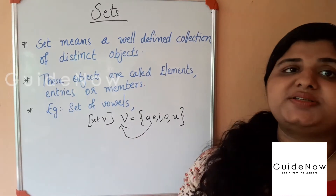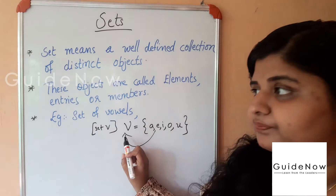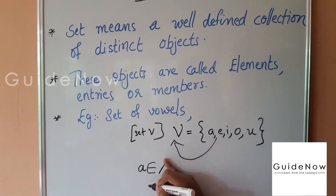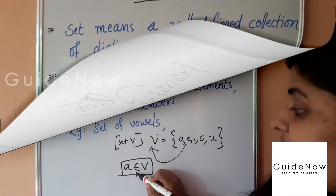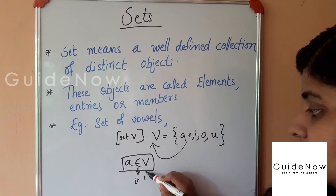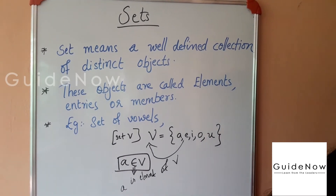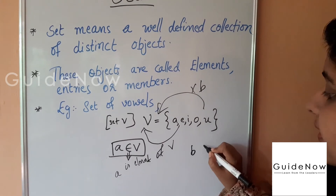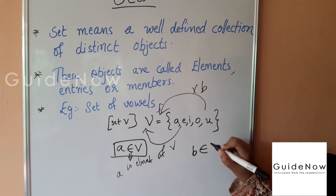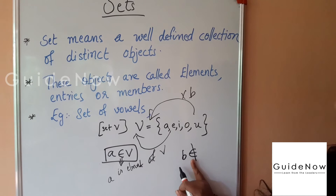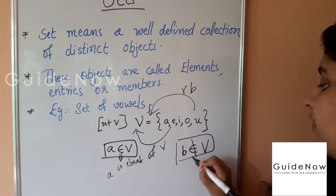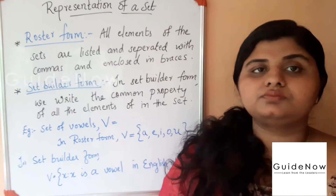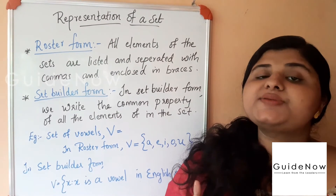How do we represent 'a is an element of set V'? We use the symbol ∈, so we write a ∈ V. Now, 'b' is not an element of set V — how do we represent that? We use the symbol ∉ (the element-of symbol with a cut through it), so we write b ∉ V.